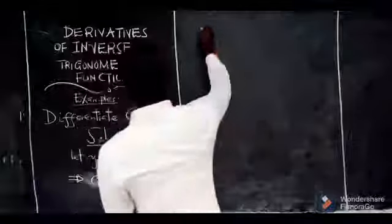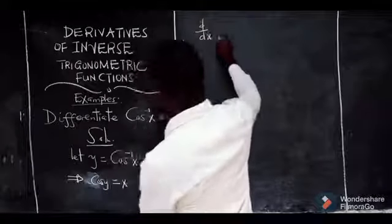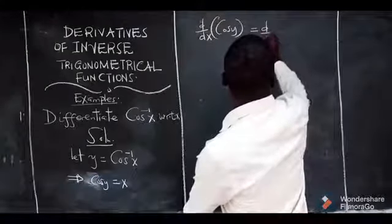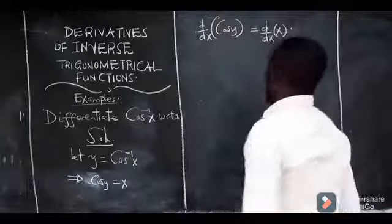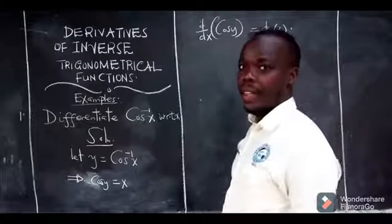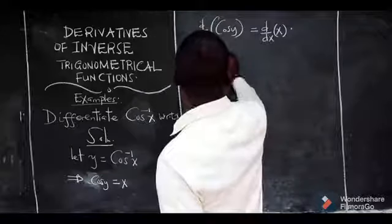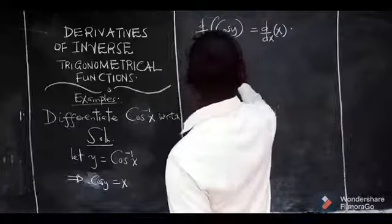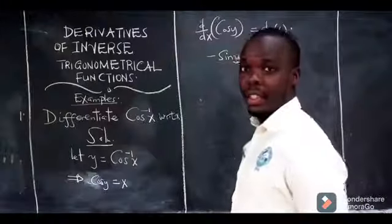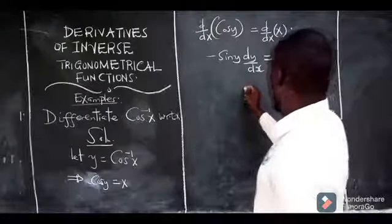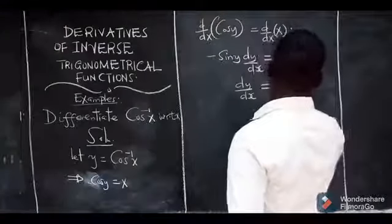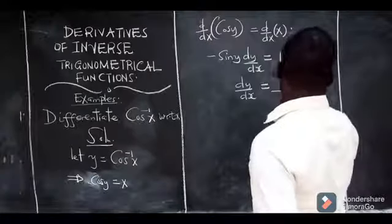Then we again differentiate both sides. We shall say: derivative with respect to x of cos(y) equals derivative with respect to x of x. Now when you differentiate cos(y) with respect to x, you first differentiate the angle, which gives you dy/dx. So at the end of the day, our result will be negative sin(y) times dy/dx, all equal to 1, because when you differentiate x you get 1. From this level, we again make dy/dx the subject, and we have negative 1 over sin(y).